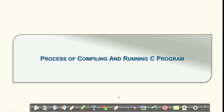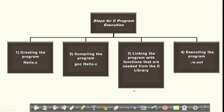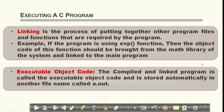The process of compiling and running a C program involves these steps: first, create a program using gedit, write your program, and save it with a .c extension. Next, compile the program using gcc hello.c. Then comes linking — the process of linking the program with functions needed from the C library. Finally, execute the program using ./a.out. For example, the printf function used for output is a built-in function defined in the library stdio.h.